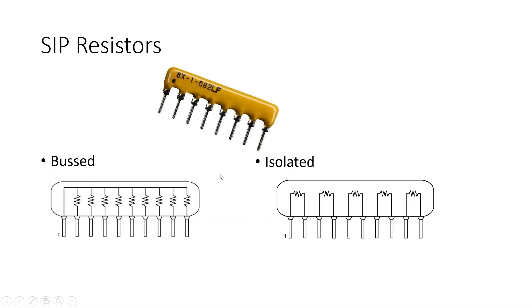Next, the SIP resistor. As talked about in previous videos, you may have two different layouts: the bussed or isolated. The bussed resistor pack has all of the pins, except for one, are all connected together to a single bus or rail to a single pin.